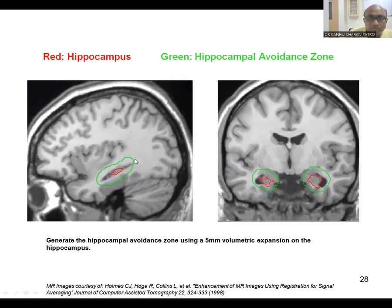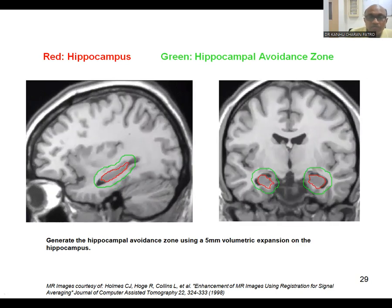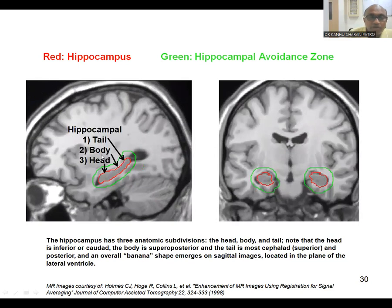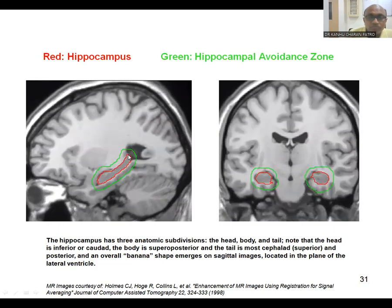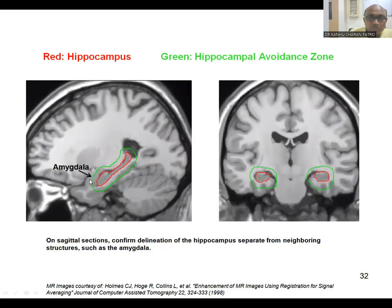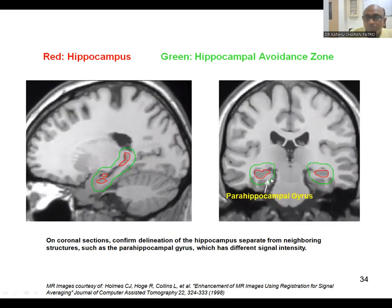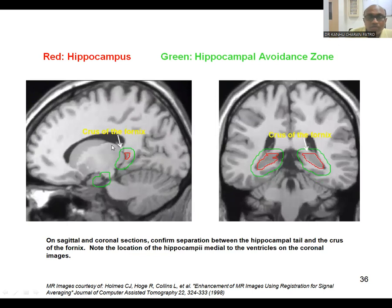You have to give a 0.5 centimeter margin around the hippocampus — this is called the hippocampus avoidance zone. The green represents the hippocampus avoidance zone and red is the hippocampus itself. It looks like a solid, obliquely placed, banana-like hypointense structure. Anteriorly is the head, the middle is the body, and posteriorly is the tail. The amygdala part should not be contoured. The parahippocampal gyrus and fornix should also not be contoured.